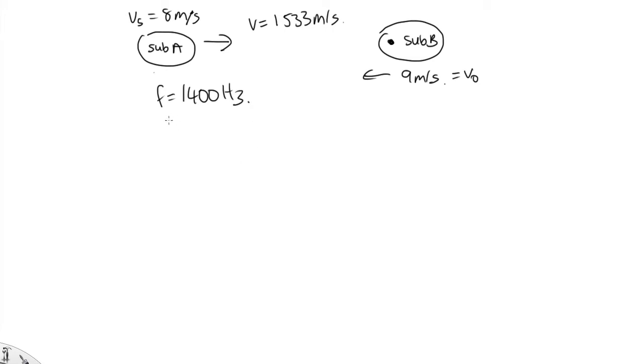So the observed frequency is given by the expression v plus v naught over v minus v s f. And in this case, we don't need to switch the signs because they're both moving towards each other.